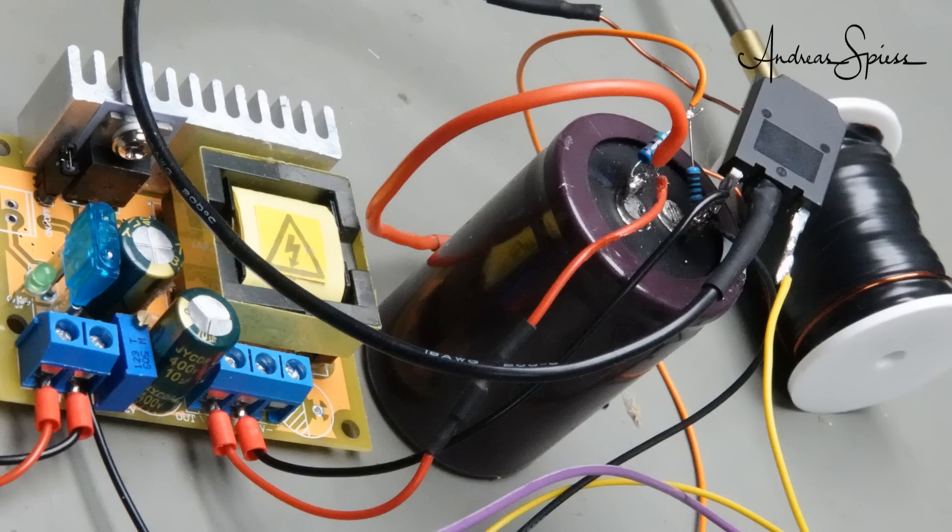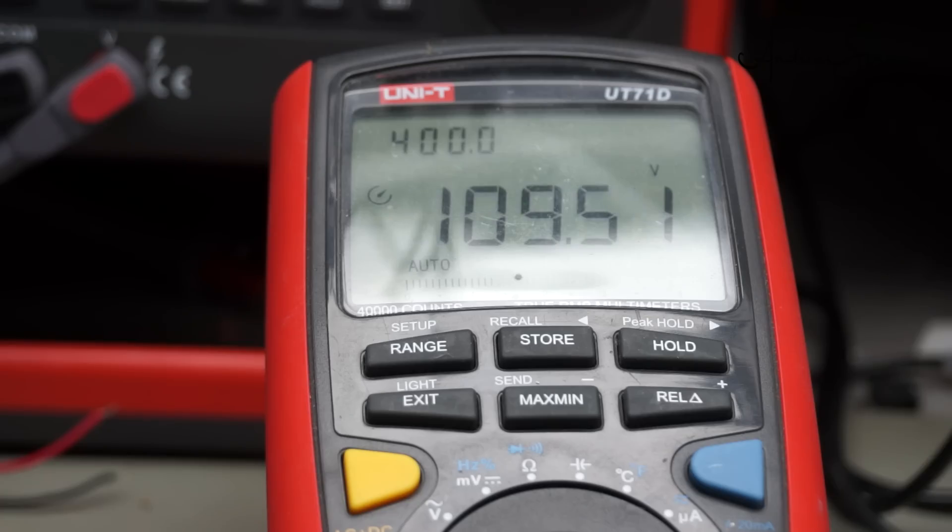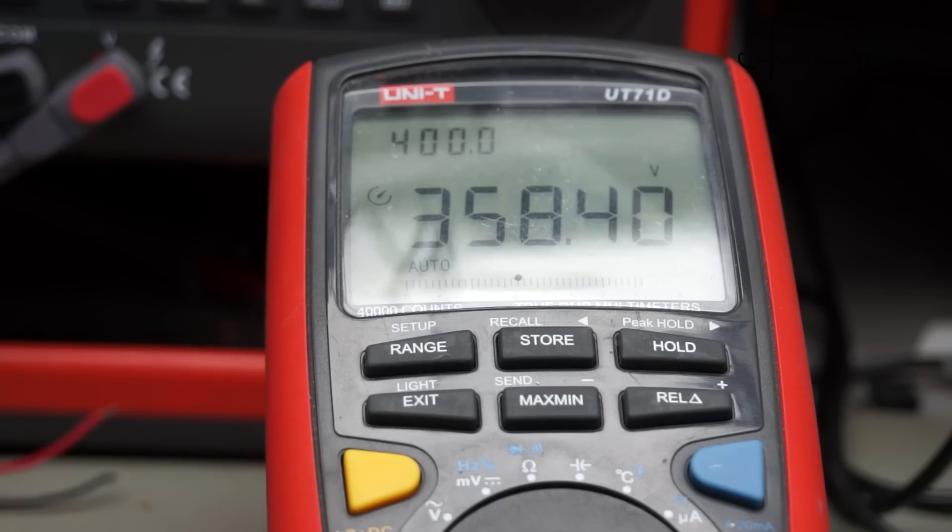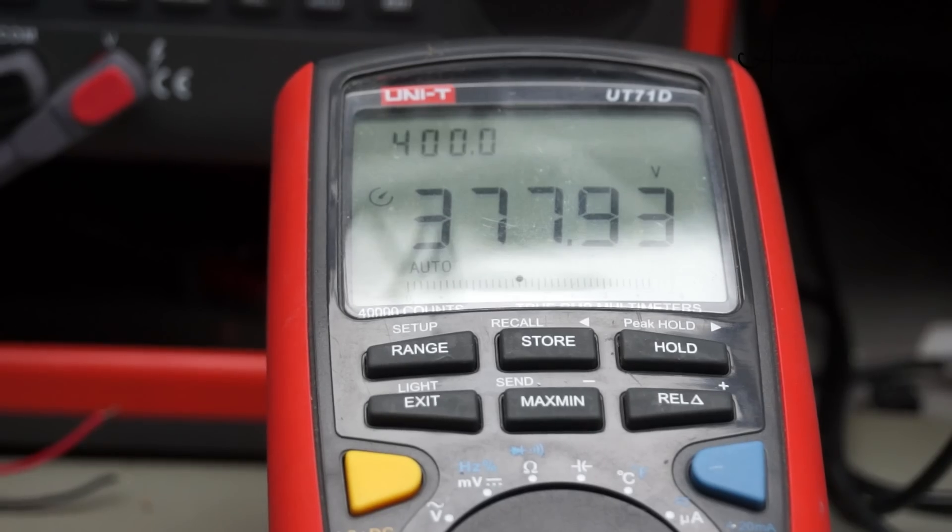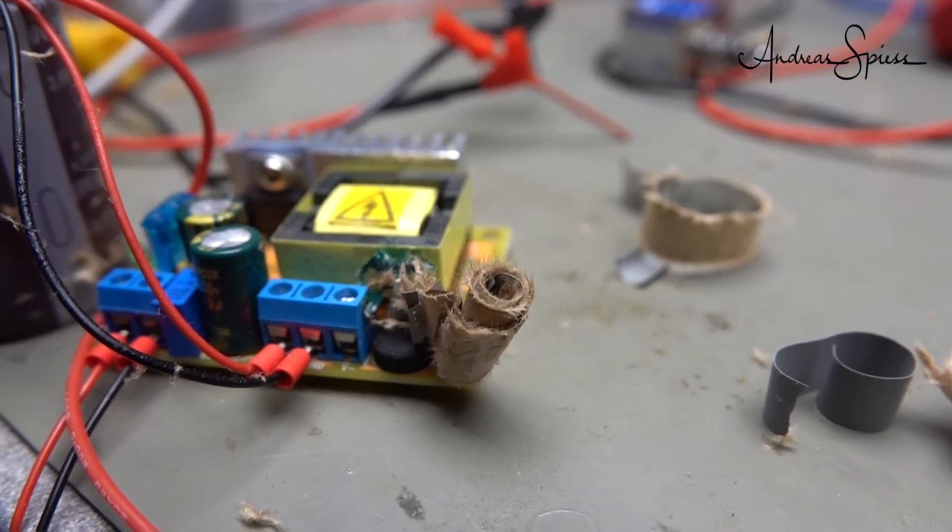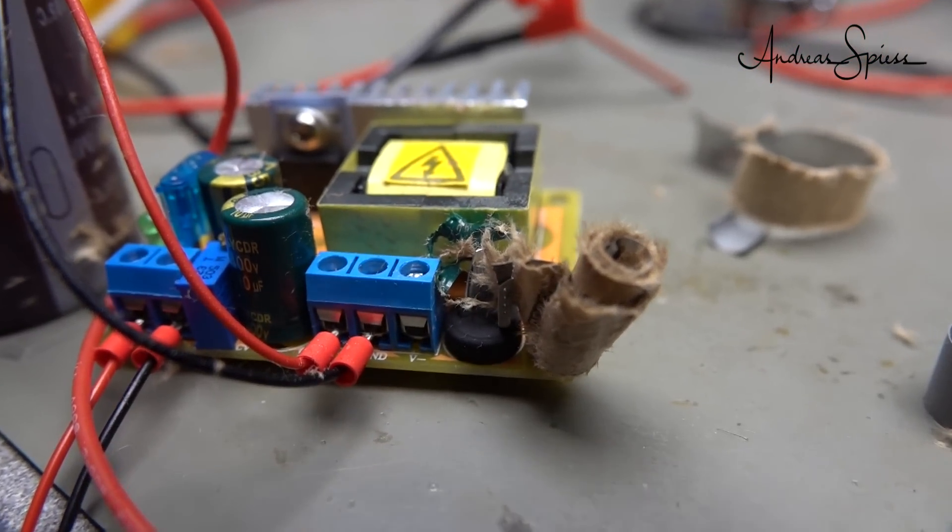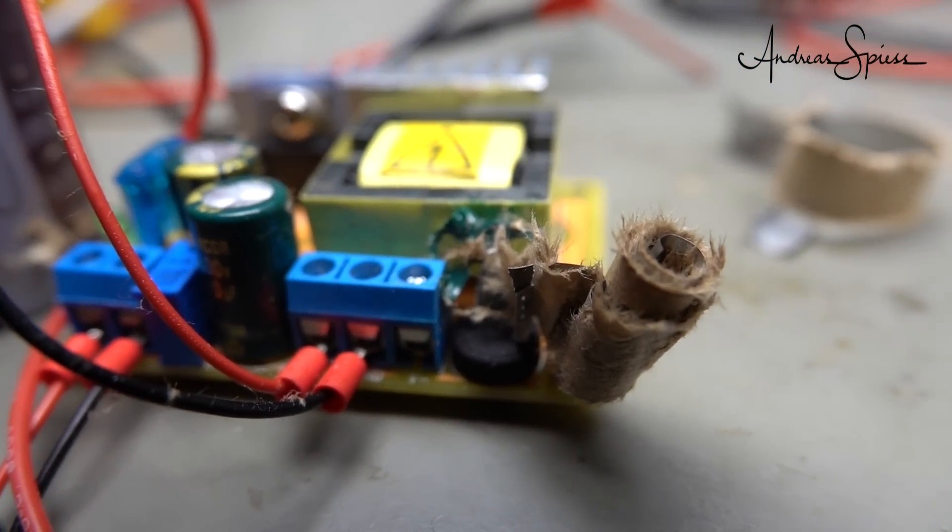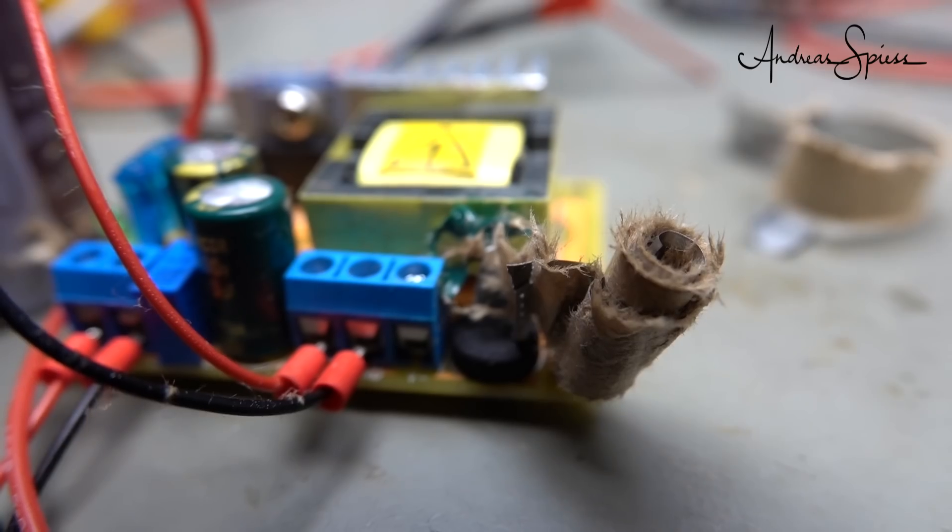When I finished the wiring, I connected 12 volts to the DC converter. And really, the voltage on the capacitor started to increase to nearly 400 volts, as promised in the description on AliExpress. Then I did some research on the PC and did not look at the bench. Suddenly, a noise like a gunshot from the bench. But it was not my coil gun. It was one of the capacitors of the DC converter which exploded.